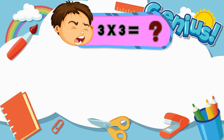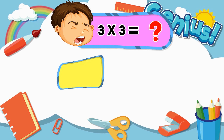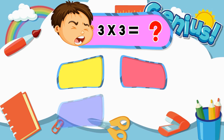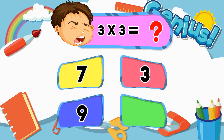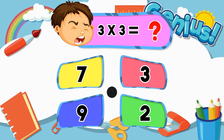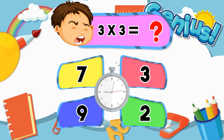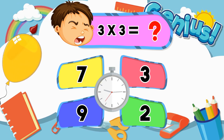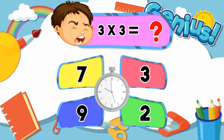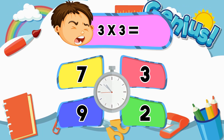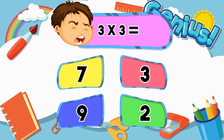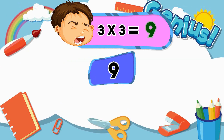What is three times three? Seven, three, nine, two. Nine.